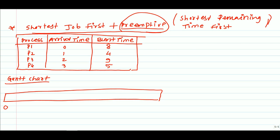The Gantt chart will start from 0. At instant 0, the arrival time is 0, and we are having only P1 in the ready queue. Even though logically with the non-preemptive concept we might execute P2 first due to shorter burst time, at instant 0 only P1 is available, so we must take P1 first for execution.